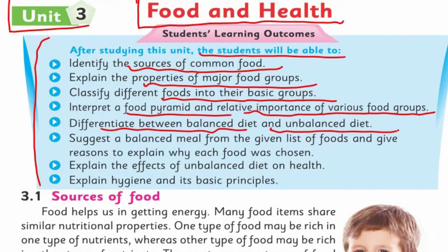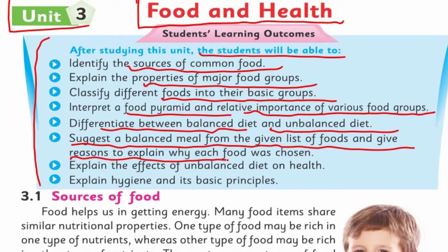We need to learn this to protect the health of our family members, and we will be discussing it with our moms, fathers, siblings, friends, and relatives. The next SLO is to suggest a balanced meal from a given list of foods and give reasons to explain why each food was chosen — which food we select, and why do we choose a particular food at a particular time?